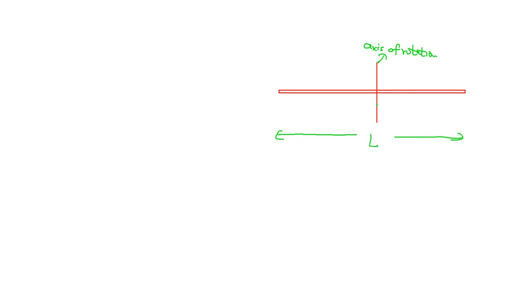We define an axis at x = 0 at the center. Since the length is L, the left end is at x = -L/2 and the right end is at x = L/2.